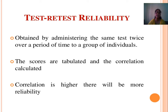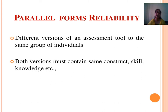Test-Retest Reliability is obtained by administering the same test twice over a period of time to a group of individuals. The scores are tabulated and the correlation is calculated. If the correlation is higher, there will be more reliability. Parallel Forms Reliability uses different versions of an assessment tool given to the same group of individuals. Both versions contain the same concepts, skills, and knowledge, and if both versions give the same results, then it is called Reliable.